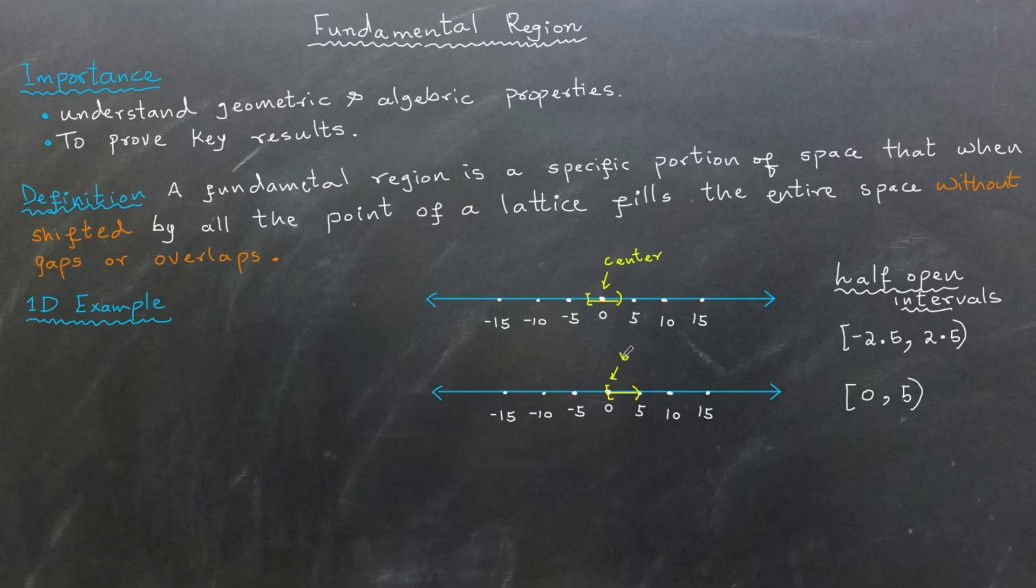When we talk about shifting a fundamental region, we mean taking that region and translating it by adding the coordinates of a lattice point to every point in the region. For instance, if we start with the interval from negative 2.5 to positive 2.5 and shift it by a lattice point like negative 10, the new fundamental region would range from negative 12.5 to negative 7.5, centered around negative 10.